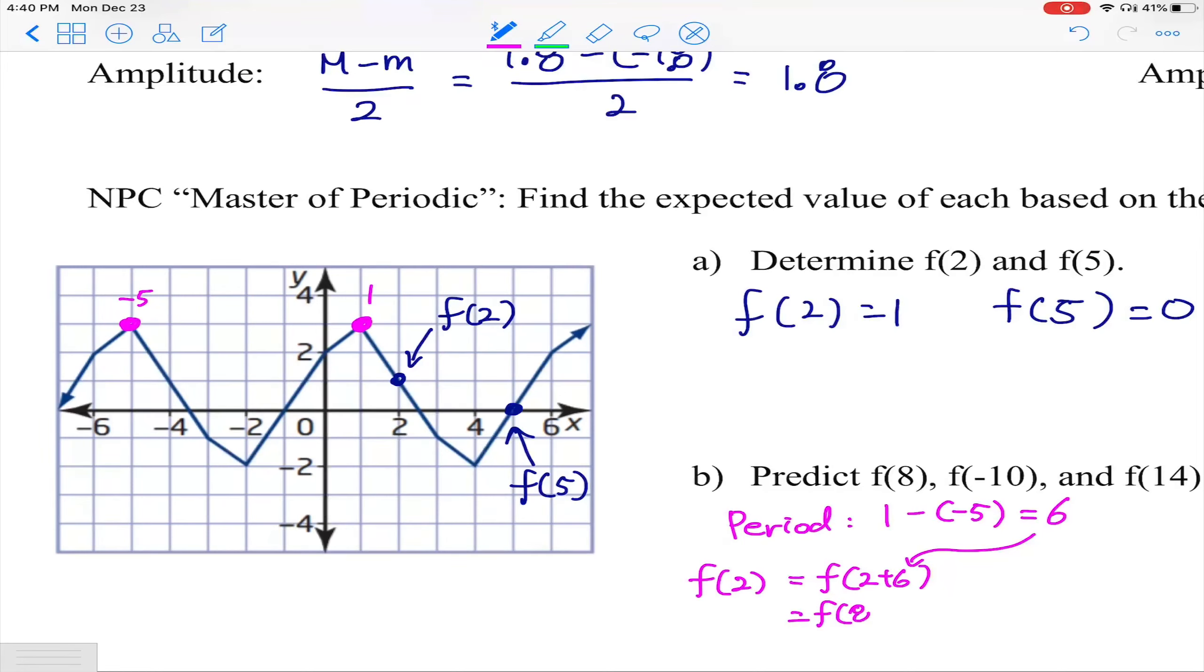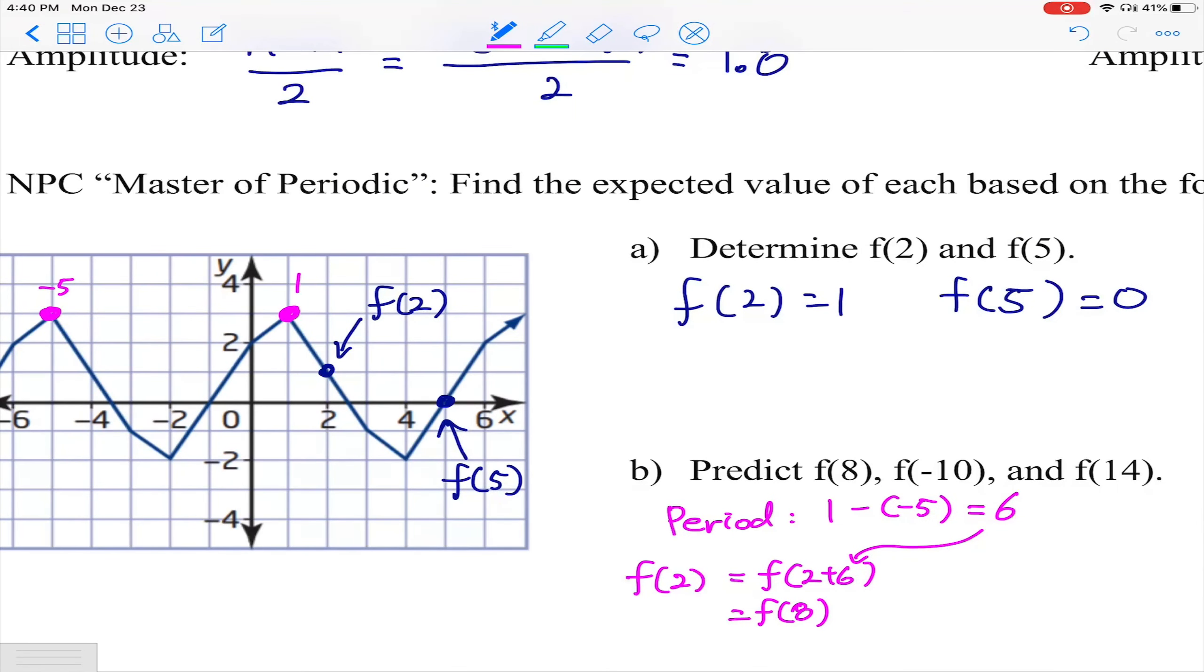After each 6 in the x value, the same y value will be repeated because it is periodic function. That means after 6 one more time, which is another cycle, this is also equal to f(8) plus 6, which is f(14). Therefore f(2) is 1, f(8) is also 1, and f(14) is also 1.